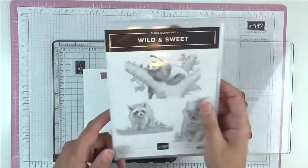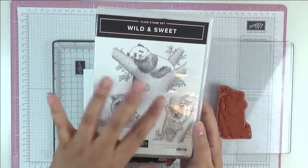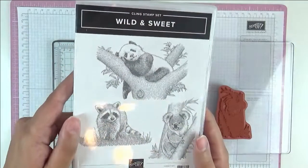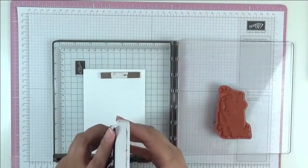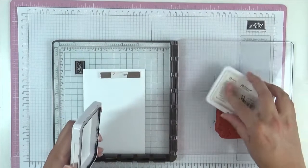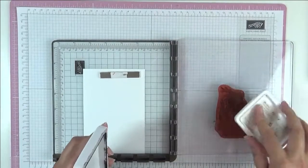This is the stamp set I'm going to use. It's called Wild and Sweet. You've got the little raccoon, you've got the koala. Oh look at the cute panda, it's so sweet. I had a lovely little panda teddy bear when I was a kid. I remember that. I don't know what happened to him. I might still have him in a box somewhere.